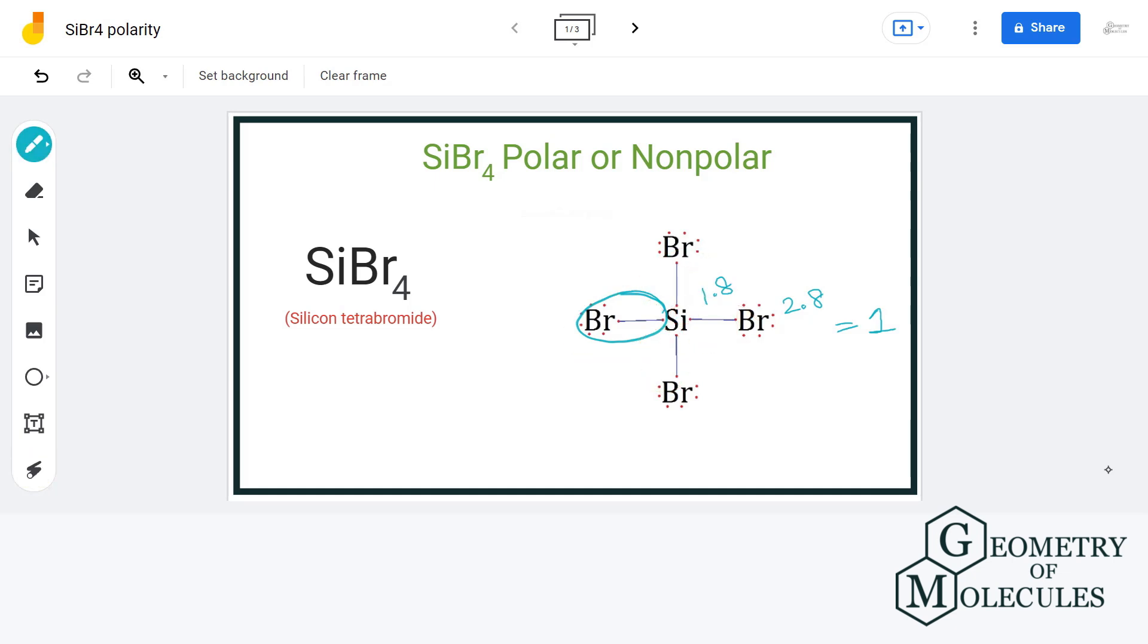But we also know that if there is symmetry in a molecule, that doesn't matter if the bonds are polar, the net dipole moment will be zero as it gets cancelled.